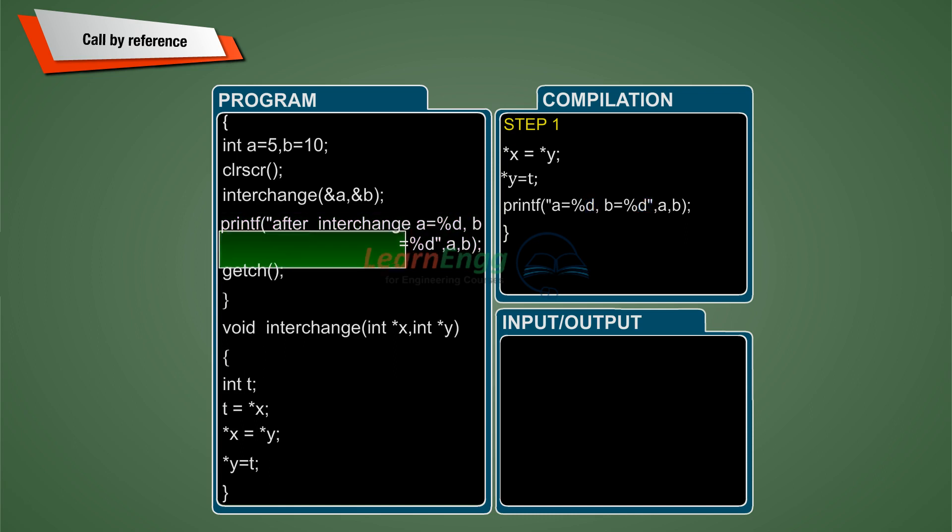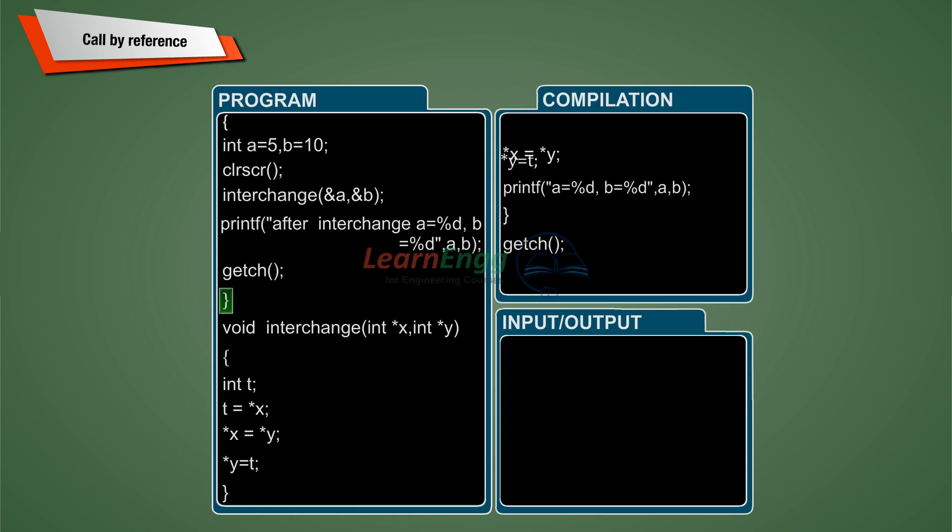After returning back to main function, swapped values of A and B are printed once again. Output: After interchange, A is equal to 10, B is equal to 5.